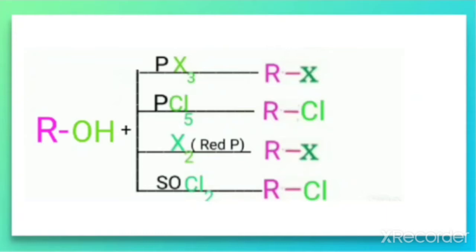We already discussed this reaction in the chapter haloalkanes and haloarenes. That means alcohols are converted into alkyl halides by the reaction with phosphorous halides like PaCl3, PaCl5, and also reaction with thionyl chloride, SOCl2.